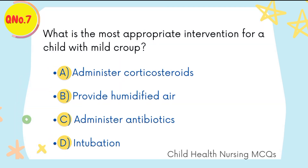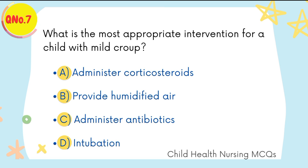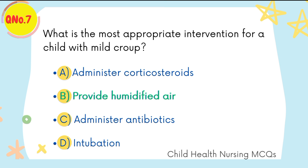Question number seven: what is the most appropriate intervention for a child with mild croup? B is the right option: provide humidified air.